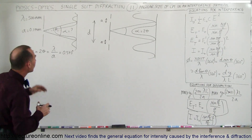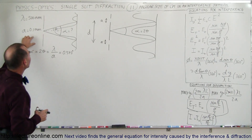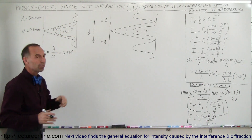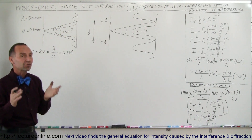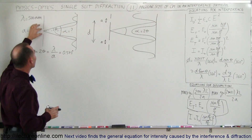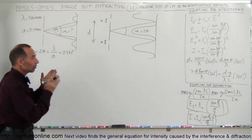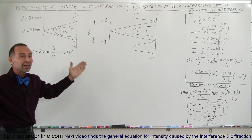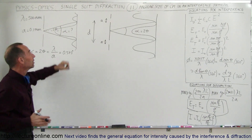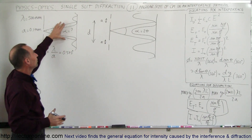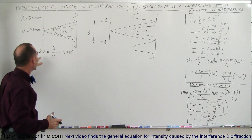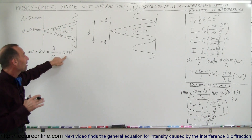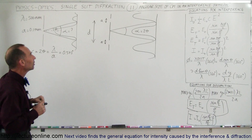In the previous video, we calculated the angular size of the central maximum of a diffraction pattern. With a very small or thin slit, we have a relatively wide diffraction pattern and therefore a relatively wide central maximum. We calculated the angle of the central maximum to be 0.573 degrees.